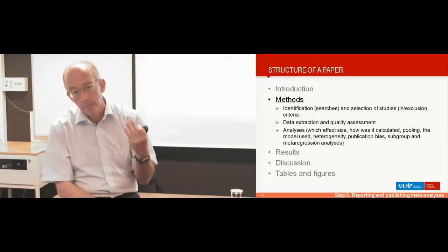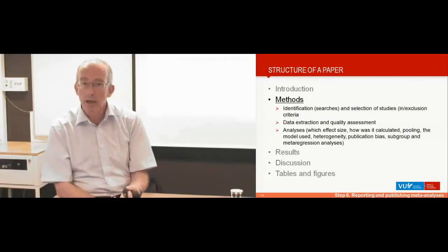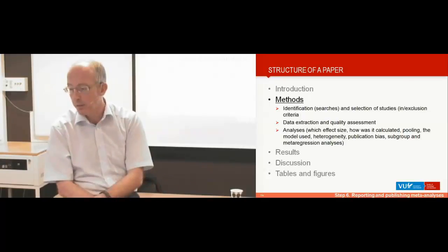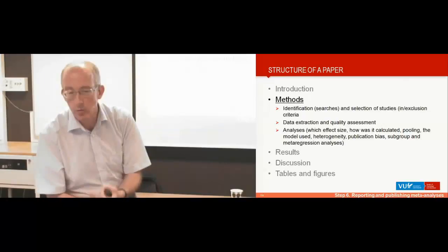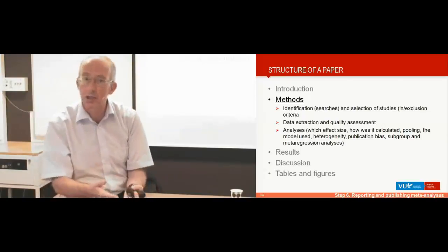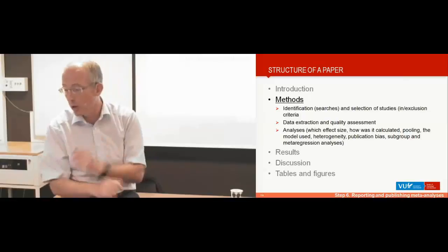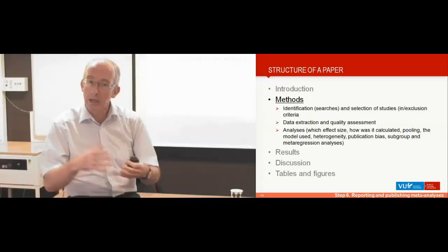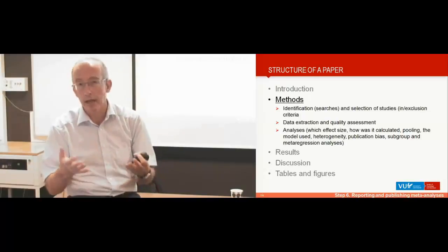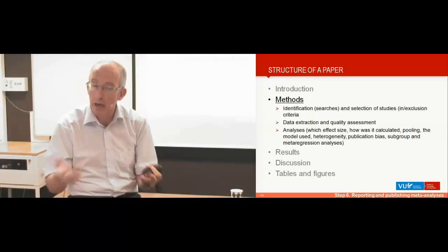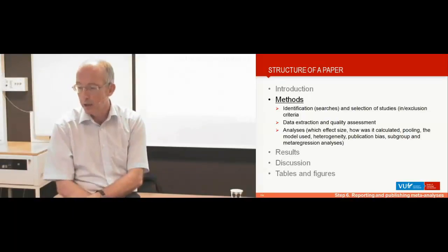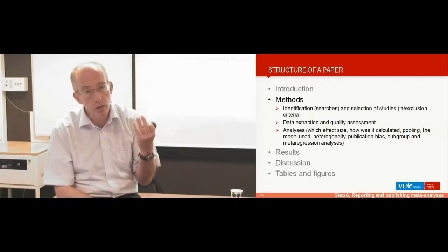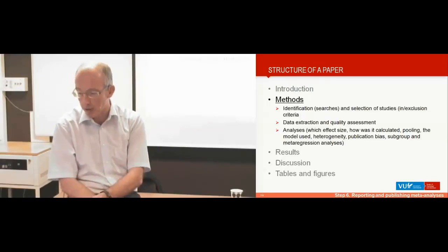Then you have to describe the analysis you've done. How do you calculate effect size? How did you select the effect sizes from the papers? How did you calculate it? Was it a continuous outcome, Cohen's D, or Hedges' g, or a relative risk, or an odds ratio? Did you use the random or fixed effects model? How did you handle heterogeneity? Did you calculate heterogeneity, the I-square? Or did you also do the Q-test for heterogeneity? How did you examine publication bias? How did you do moderator and subgroup and meta-regression analysis?